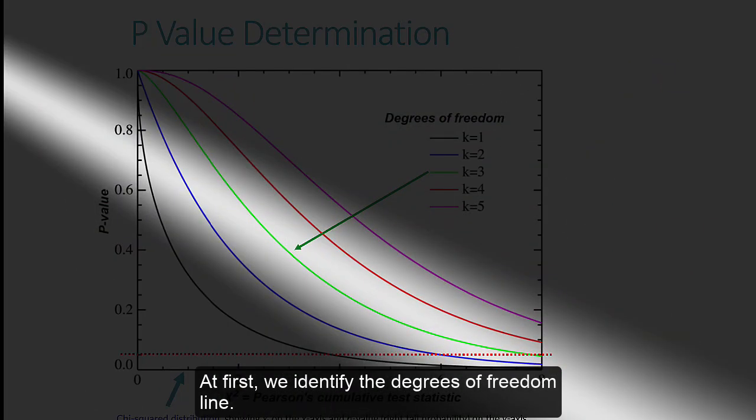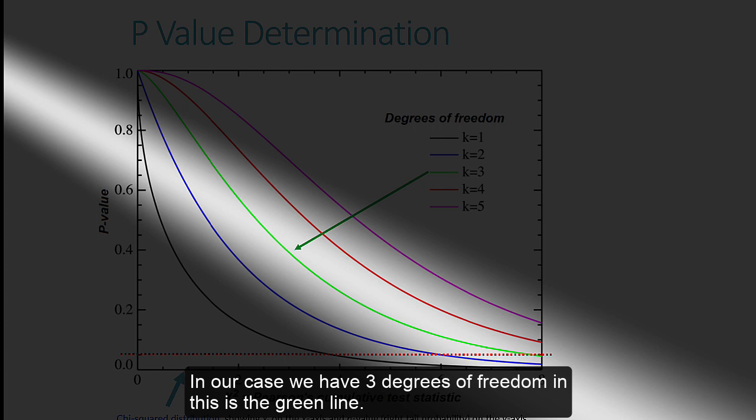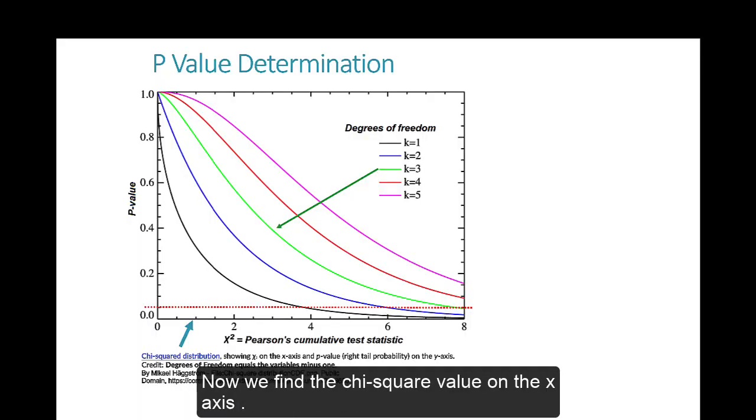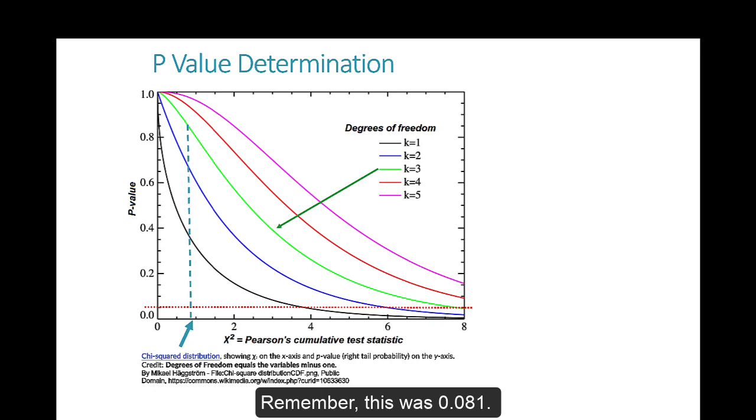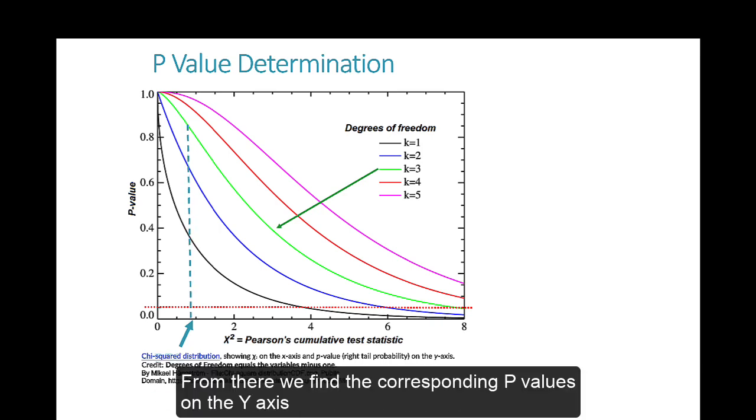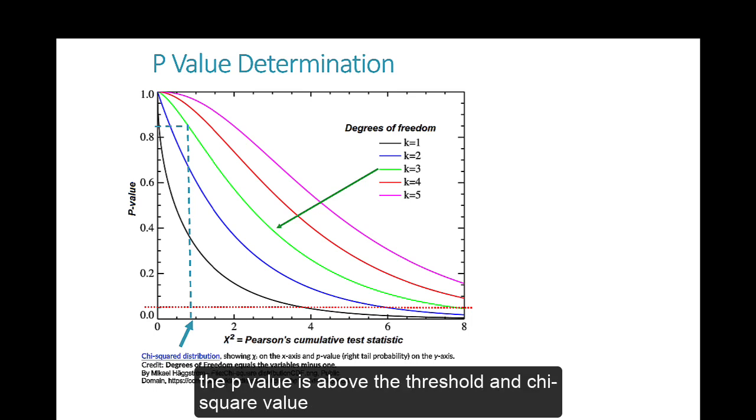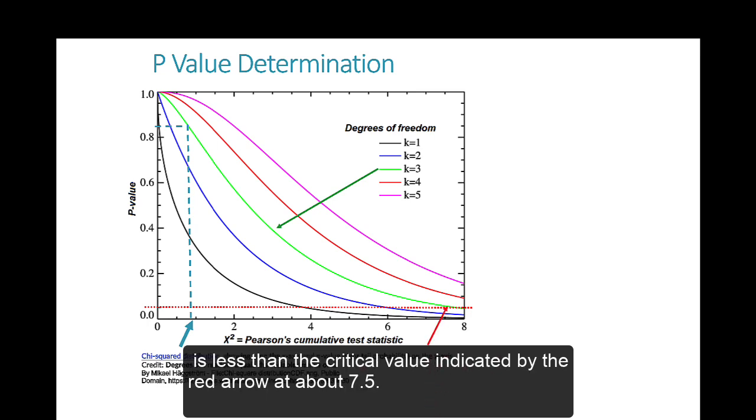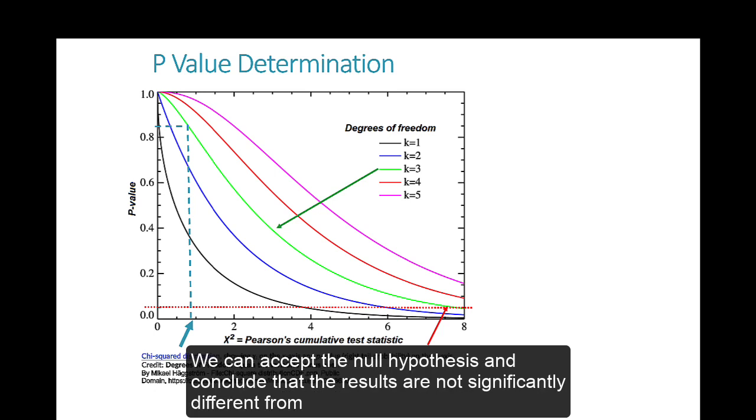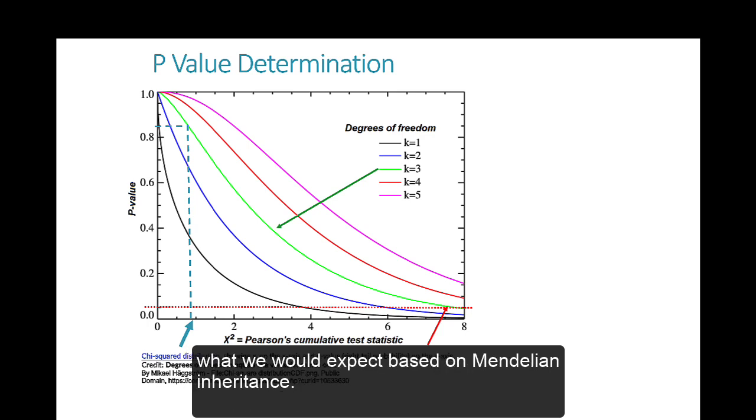At first, we identify the degrees of freedom line. In our case, we have 3 degrees of freedom and this is the green line. Now we find the chi-square value on the x-axis. Remember, this was 0.081. From there we find the corresponding p-values on the y-axis for 3 degrees of freedom. As you can see, the p-value is above the threshold and chi-square value is less than the critical value indicated by the red arrow at about 7.5. We can accept the null hypothesis and conclude that the results are not significantly different from what we would expect based on Mendelian inheritance.